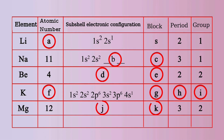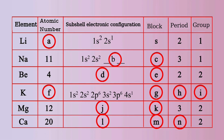For Magnesium, the atomic number is 12. Let's write its subshell electronic configuration and find its block. Magnesium belongs to period 3 and group 2. For the element Calcium, atomic number is 20. We can write its subshell electronic configuration. Block and period can be found out, and it belongs to group 2.